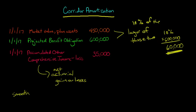We see here that our beginning balance of the accumulated other comprehensive income for net actuarial gains and losses is $35,000. And when I say loss, I mean that we basically have a debit balance.